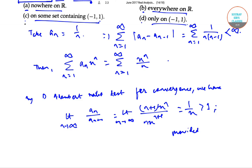|x| < 1. Now at x = 1, the series diverges, and at x = -1, the series converges by Leibniz test.